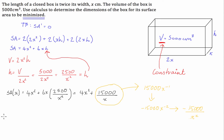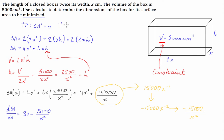So the derivative of surface area with respect to x is going to be equal to 8x minus 15,000 over x squared. And from earlier, we know that this has to equal zero.